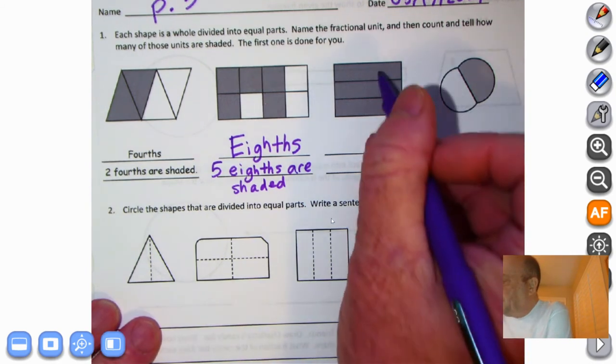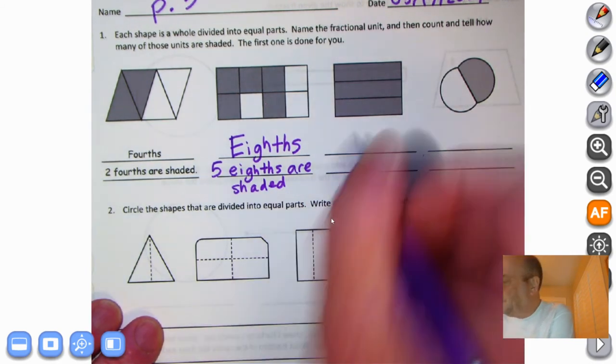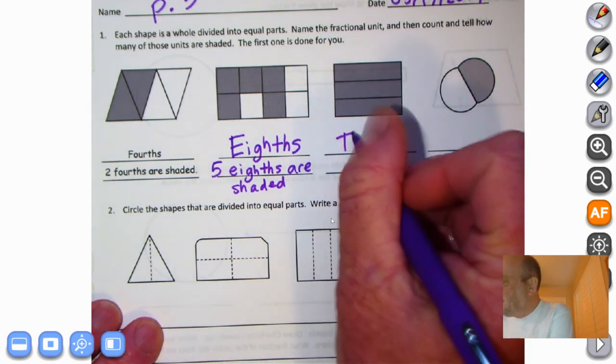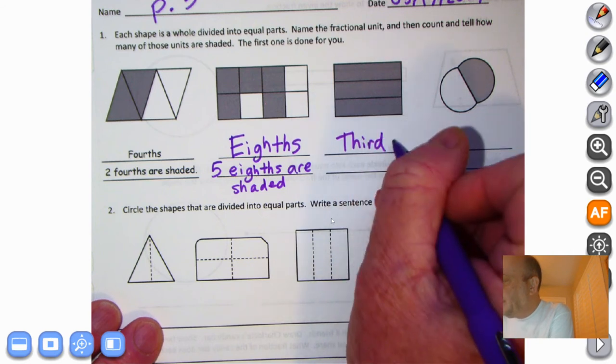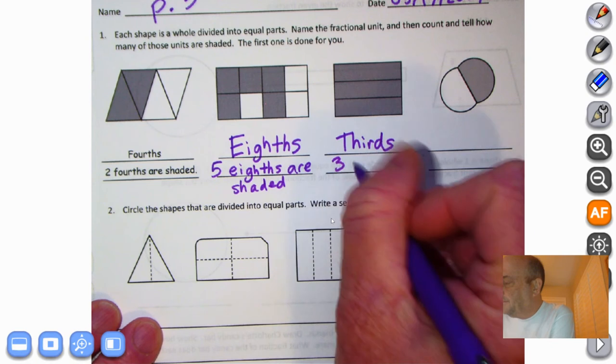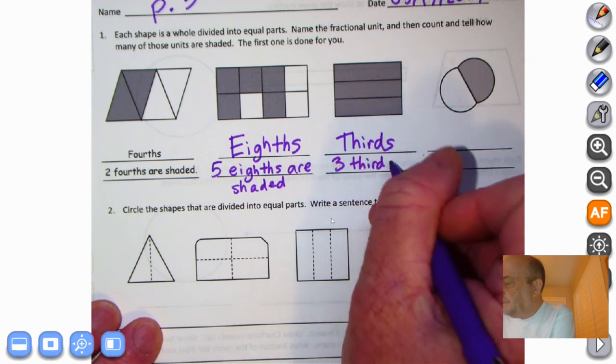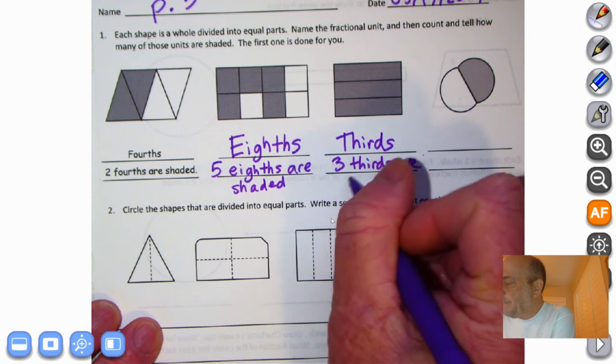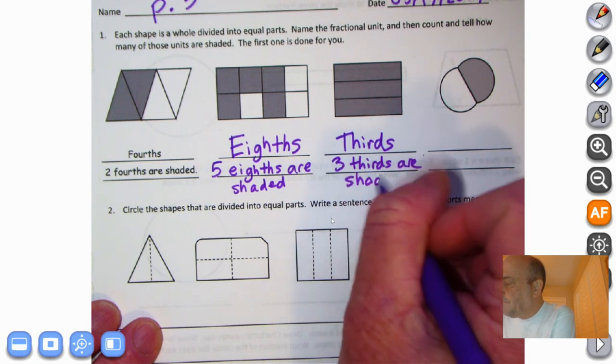Let's see what this one is all about. One, two, three. Those are what we call thirds. How many are shaded? Three thirds are shaded.